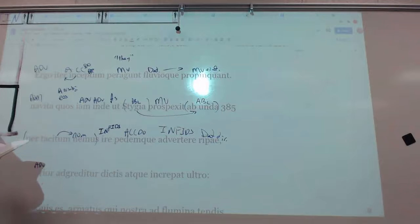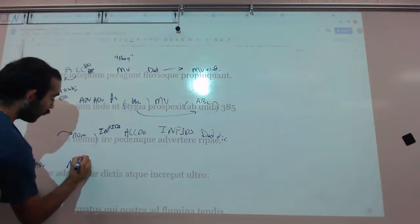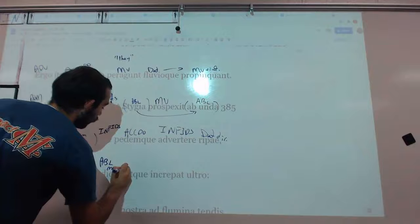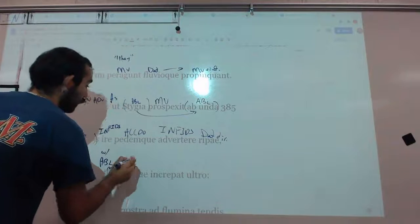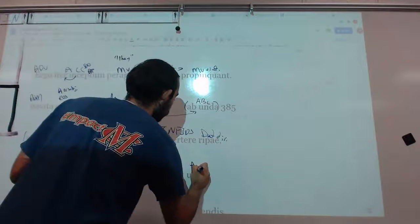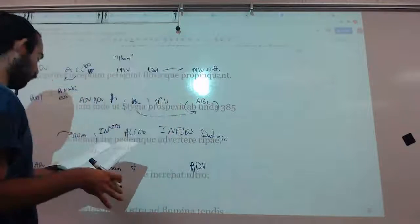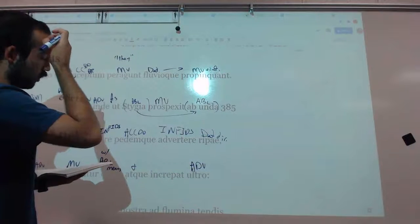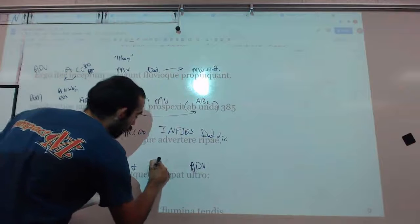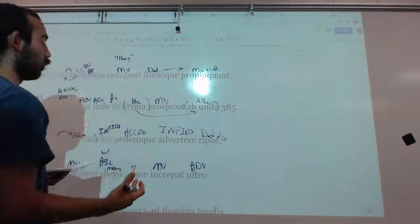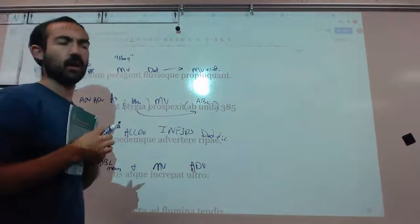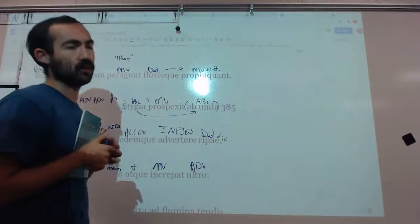He agreditur, he addresses, ablative dictis is an ablative of means, with words, and increpat ultro. And further, he, increpat is a weird word because it's more like to reprove, which is just to chide them. He's kind of reproaching them. In other words, he's kind of scolding, why are they coming? And that's what we're going to find out here in these next few lines as Charon begins to talk.